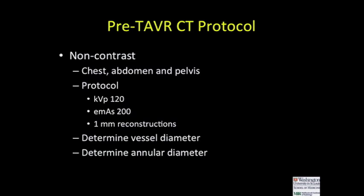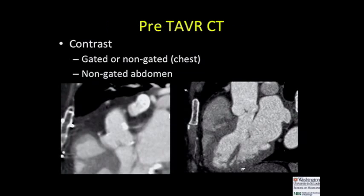A non-contrast protocol we use is pretty much just a non-contrast chest, abdomen, and pelvis doing one-millimeter reconstructions. We will measure the inner diameter of the vessels if we can see them and the annular diameters to give rough estimations. As for the post-contrast, we have recently been pushing gated studies. Looking at the gated images in mid-diastolic phase versus the non-gated, we get really nice anatomic detail and reproducible measurements.